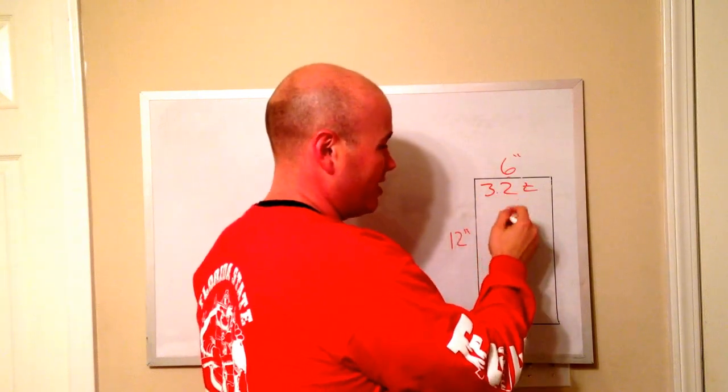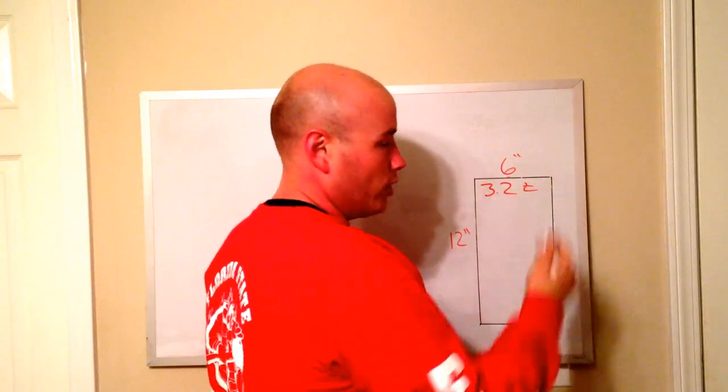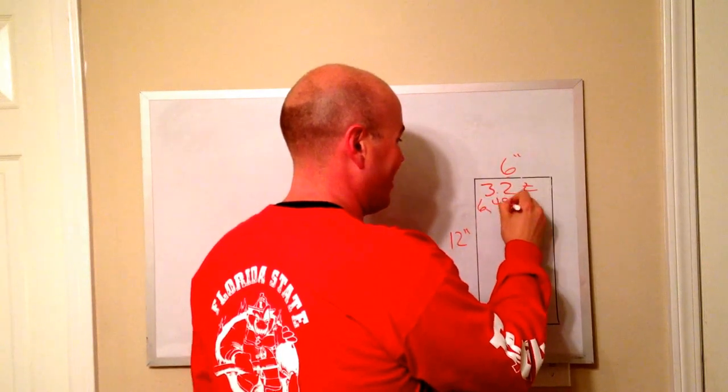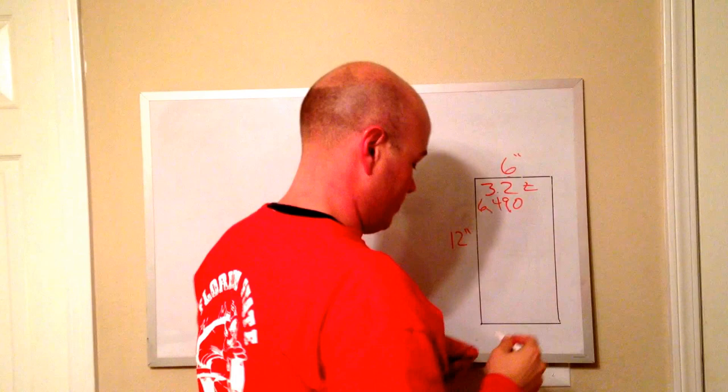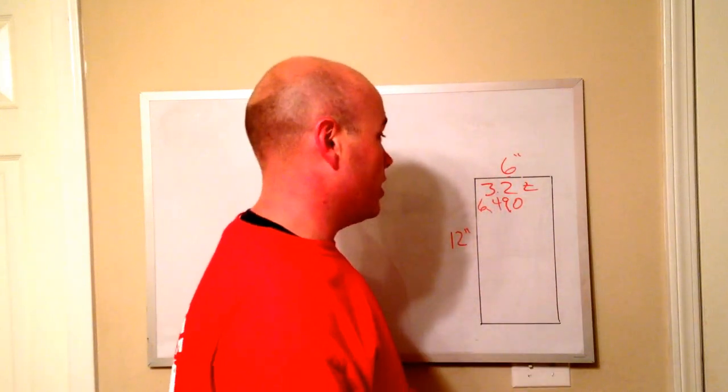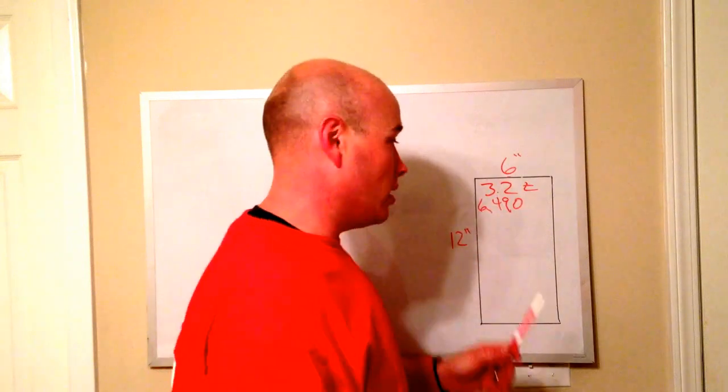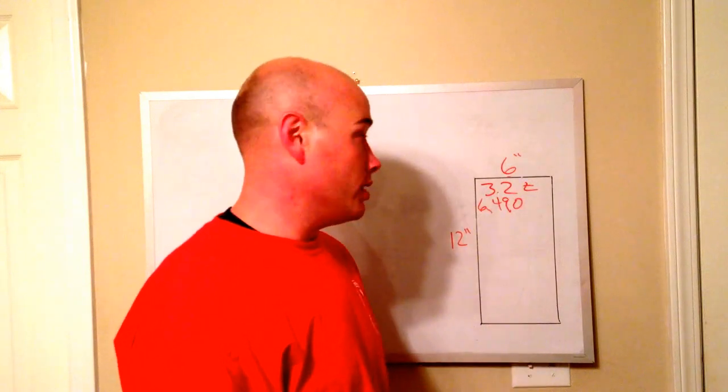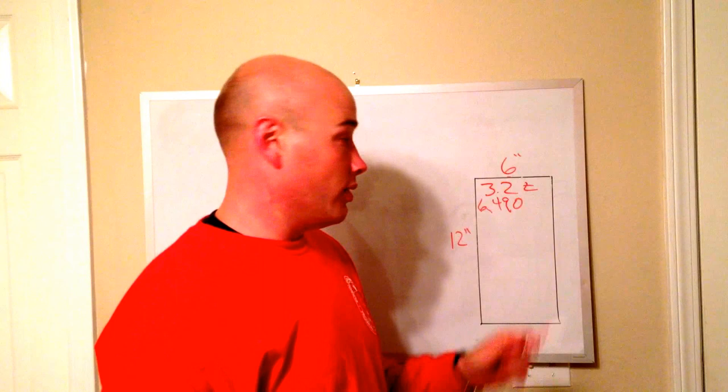We'll simplify it to say it's a 3 ton airbag. If you figure out 3.2 tons is actually 6,490 pounds, you can simplify that and say 6,400, 6,000 whatever, just for ease of marking your bag. If you decide to mark your airbags, I recommend it instead of trying to look for the small diagram that tells you what it is. You can have it marked with a paint pen and pull it off the truck and know exactly what it is.